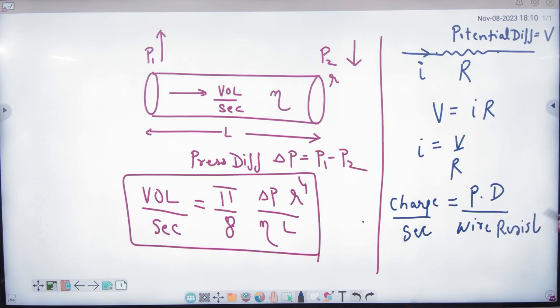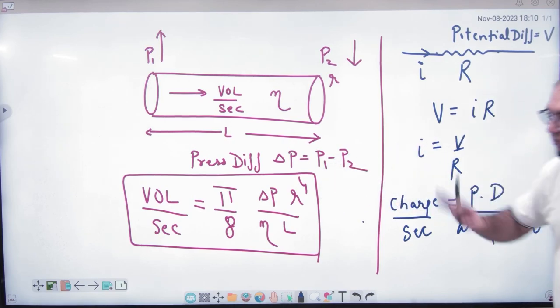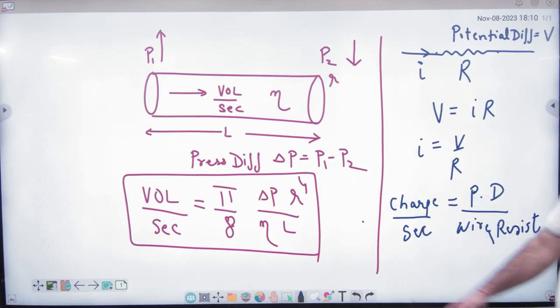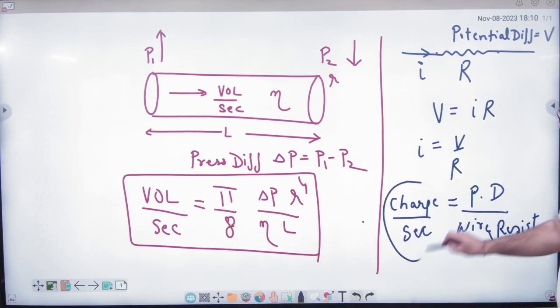Is this point clear here? Wire resistance. Now basically what is this? Compare it. Electrical resistance, compare it with the tube. So what will we do? Volume flowing per second. What will we do? Charge flowing per second.